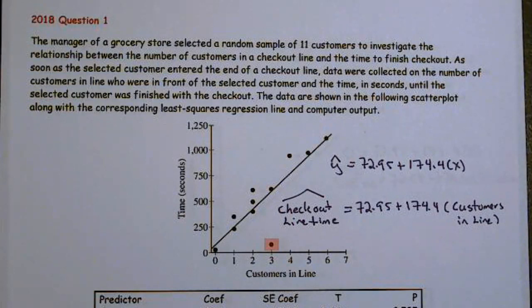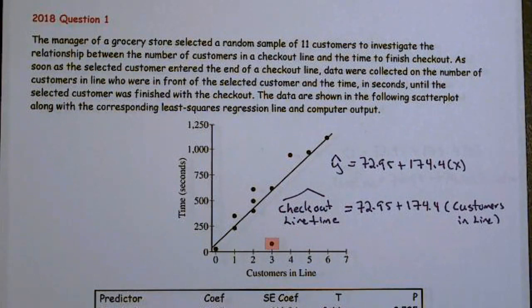The manager of a grocery store selected a random sample of 11 customers to investigate the relationship between the number of customers in the checkout line and the time to finish the checkout.